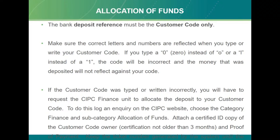The next topic is allocation of funds. When you deposit funds into the CIPC bank account, the only reference must be your customer code. Do not write your enterprise number or surname next to your customer code, as the money will not be allocated correctly. Also make sure you don't put a zero instead of the letter O, or the letter I instead of a one, because then the money will be allocated to someone else's account.